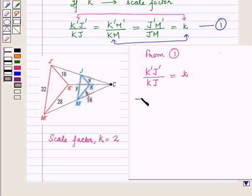Now this implies K'J' is 16 upon KJ is x is equal to k which is equal to 2, and this implies x is equal to 16 upon 2 which is equal to 8.